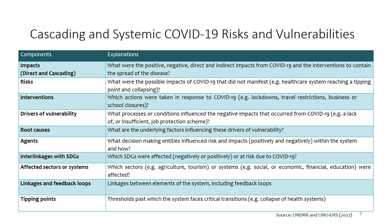Given the risk COVID-19 poses and the disease affecting people differently, what are the drivers of vulnerability? Unemployed people not being able to work, the elderly, women — what are the root causes and factors influencing these drivers? The other component is agents: what decision-making entities influenced the risk and impact within the system? What have they done to reduce the impact of COVID-19 or support vulnerable groups? What are the interlinkages with the SDGs? Many countries have been lagging behind, with progress towards Sustainable Development Goals delayed due to COVID-19. Sectors most affected include tourism, transport, and agriculture.